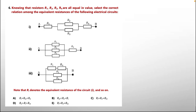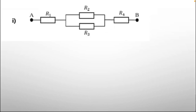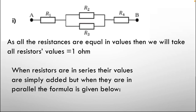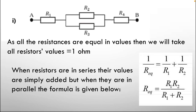Question 6: Knowing that resistors R1, R2, R3, and R4 are all equal in value, select the correct relation among the equivalent resistances of the three given electric circuits. We will calculate the resistance of each circuit part. Since all resistances are equal, we take each resistor value as 1 ohm. When resistors are in series, their values are added. When in parallel, the formula is: 1/R_eq = 1/R1 + 1/R2, or equivalently R_eq = (R1 × R2)/(R1 + R2).